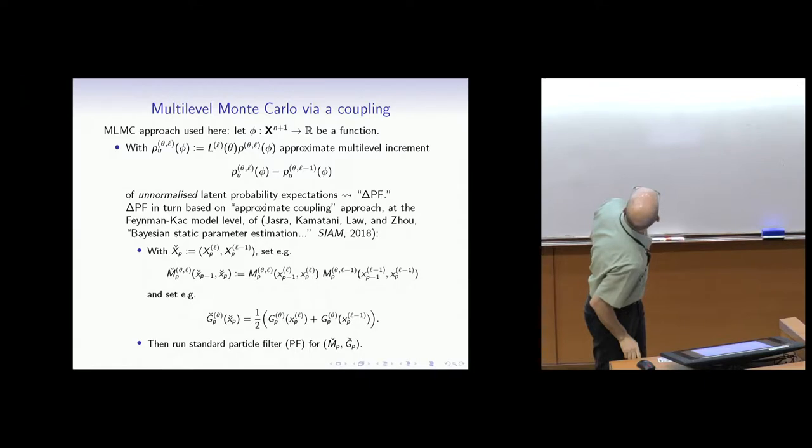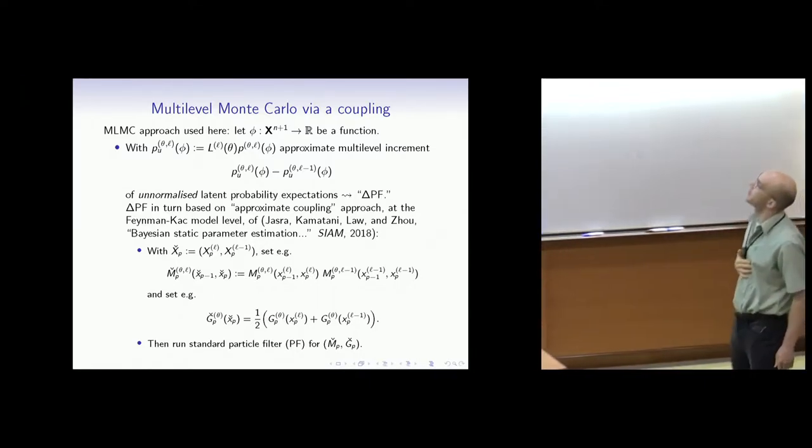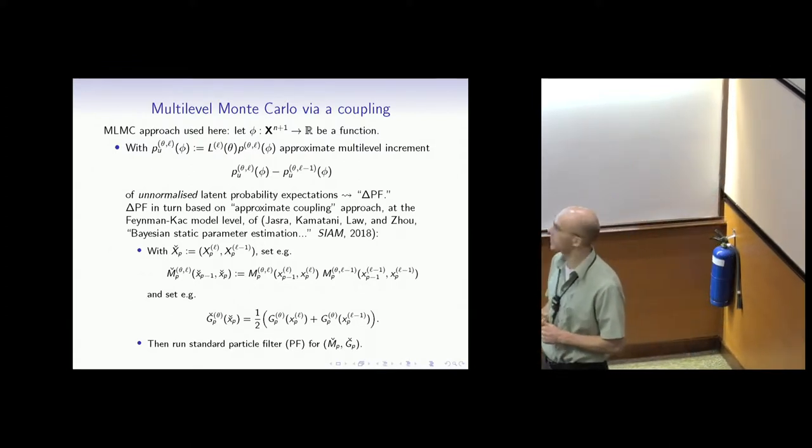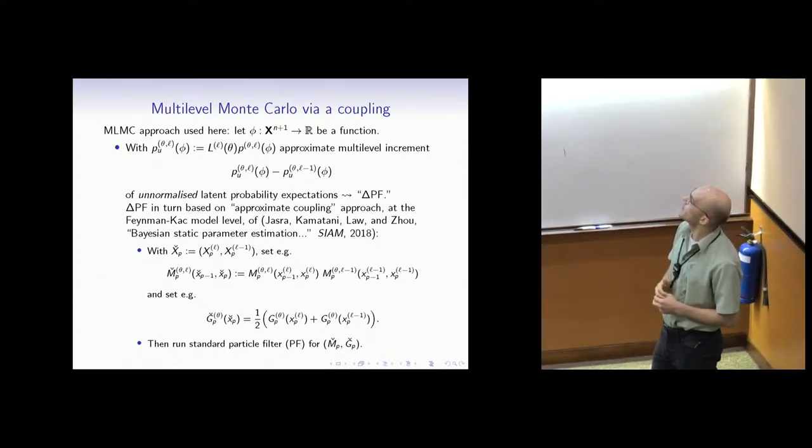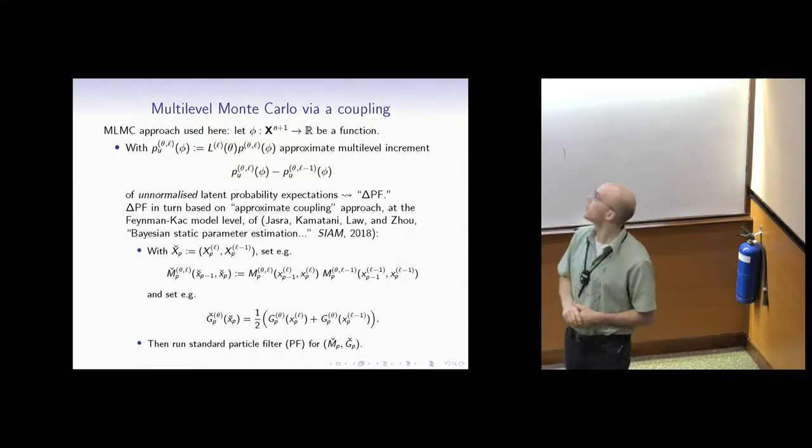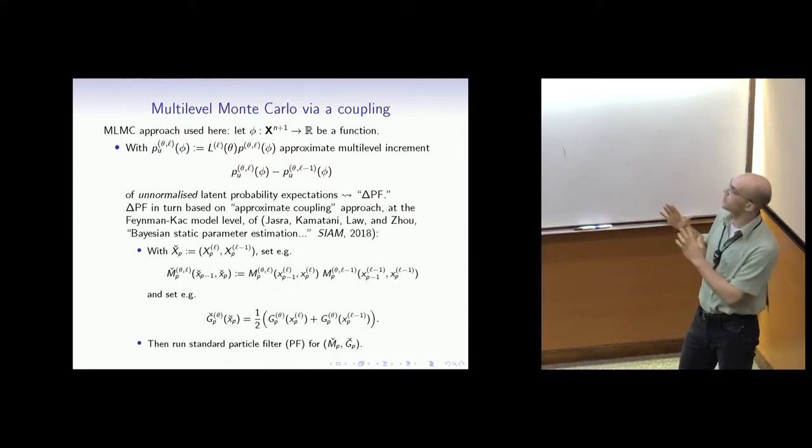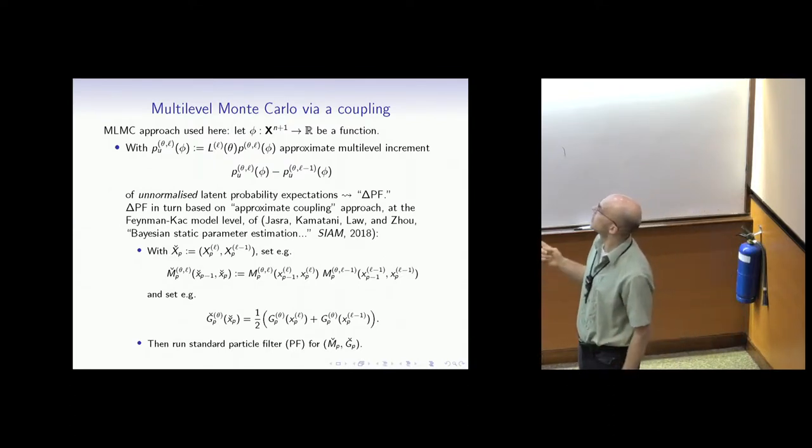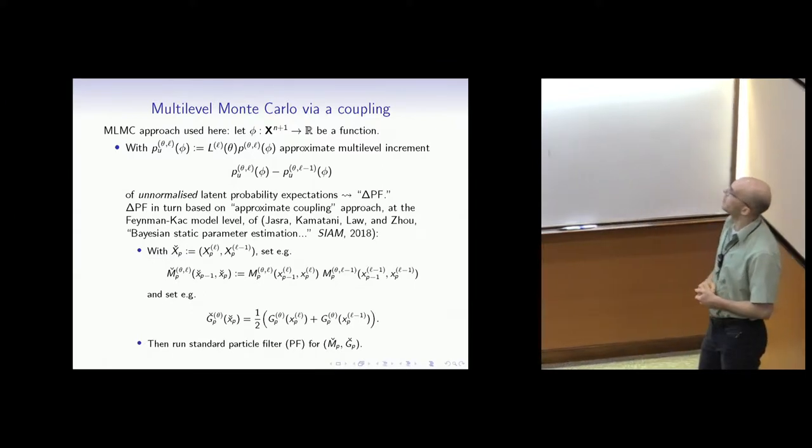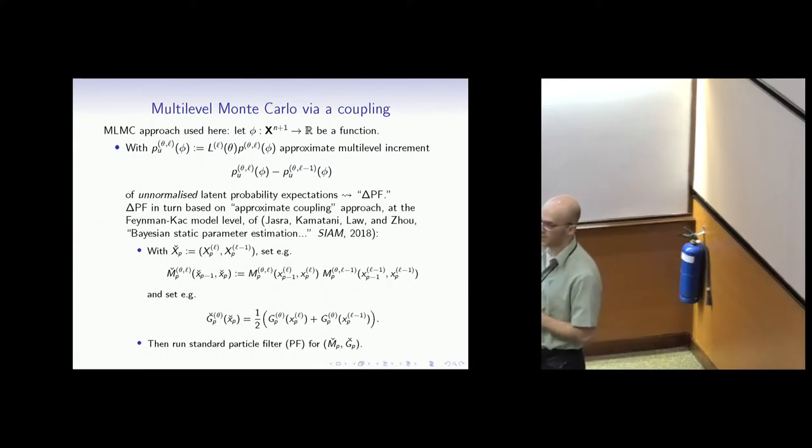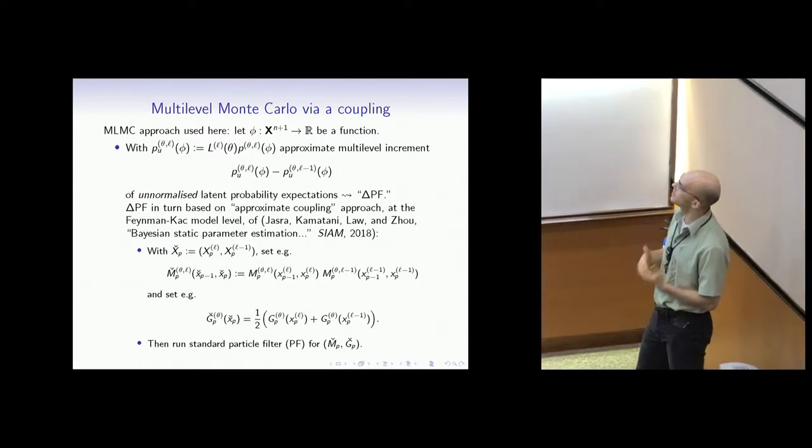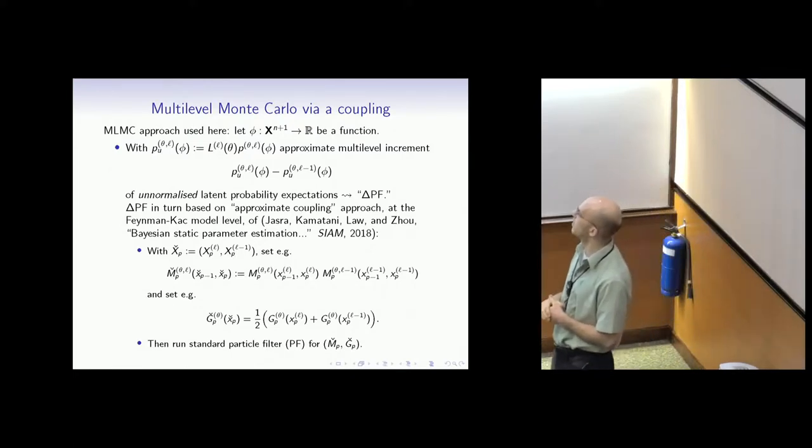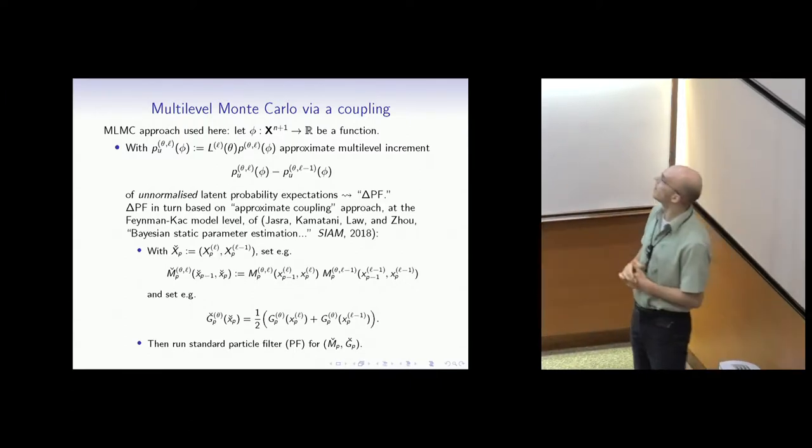The next part I'd like to introduce is the multi-level Monte Carlo, which goes back to a simpler setting based on telescoping ideas of Heinrich and Giles. We consider a function phi. We're only interested right now on the problem of latent state inference. We're interested in approximating this increment where the novelty is that we're only interested in the unnormalized version. P-U is the unnormalized latent probability.